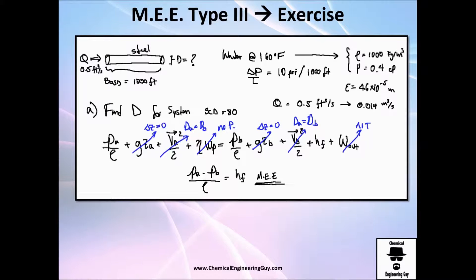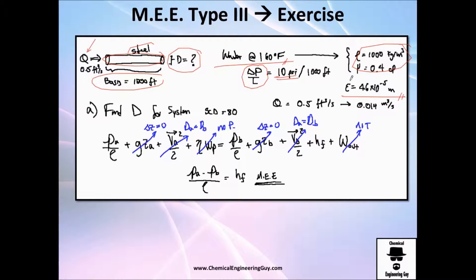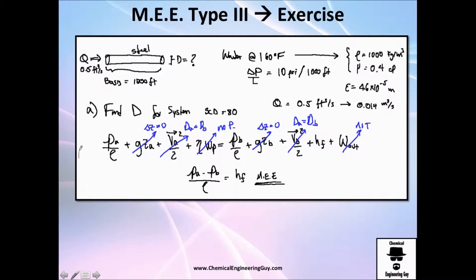Let's do this exercise. We have a steel pipe, a volumetric flow rate, a length of 1000 feet, and a known water temperature with given properties. The pressure loss is 10 psi per thousand feet. Since it's steel, we can find the roughness, and we need to find the diameter given it's a Schedule 80 pipe. Writing the mechanical energy equation: we cannot cancel pressure because there is a pressure loss. We can cancel height since both points are at the same level, and we can cancel velocities because the diameter is the same throughout.